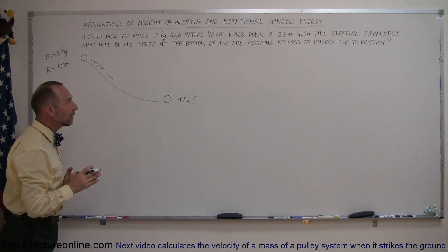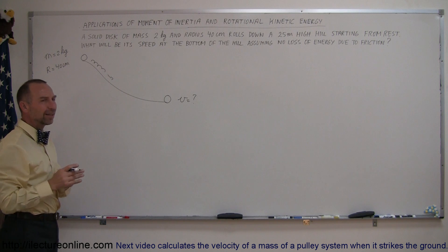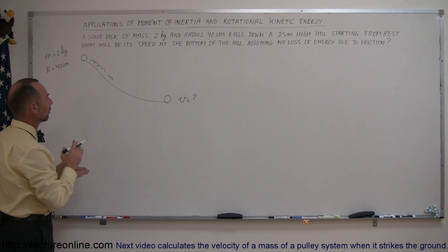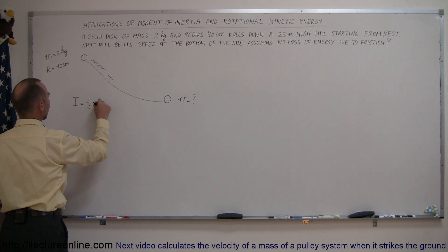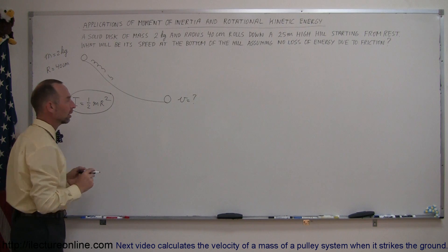So let's first calculate the moment of inertia, or at least see what the moment of inertia of this disk is. Well since we know that it's a solid disk, I of the solid disk is equal to one half the mass times the radius squared. So we'll keep that in mind, that's the moment of inertia for a solid disk.